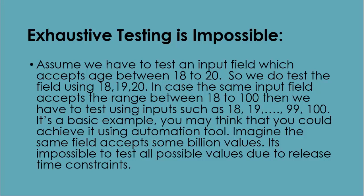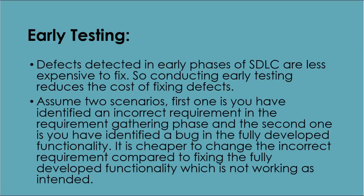We test the field using 18, 19, and 20. In case the same input field accepts a range between 18 to 100, then we have to test using inputs such as 18, 19, 20, 21, and so on up to 99, 100. You may think you could achieve it using an automation tool, but imagine the same field accepts billions of values — it's impossible to test all possible values due to release time constraints. So instead of exhaustive testing, we take risk and priorities into consideration while estimating testing efforts.